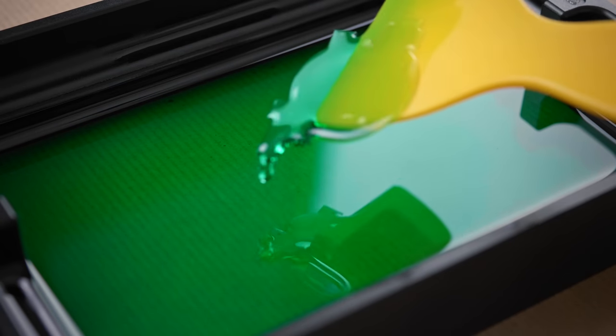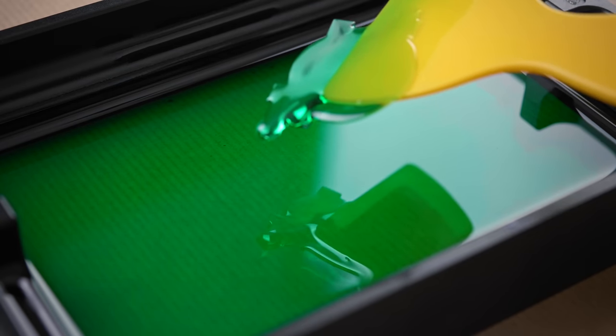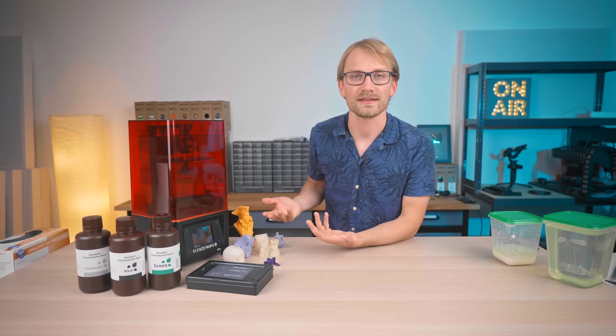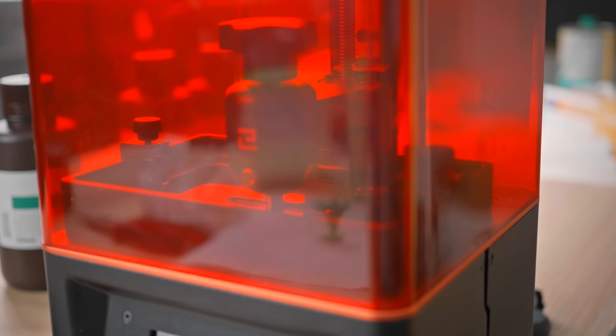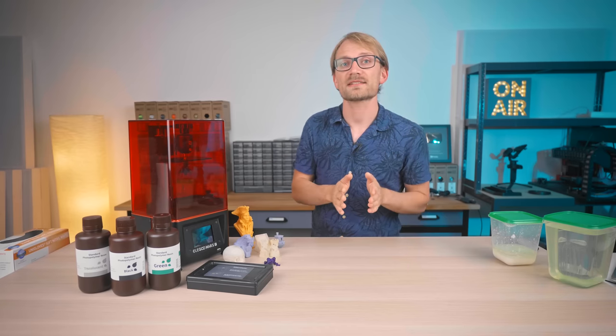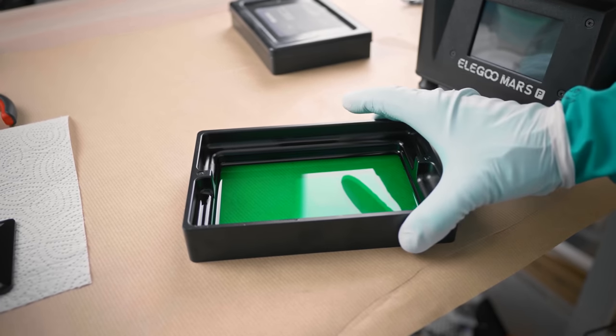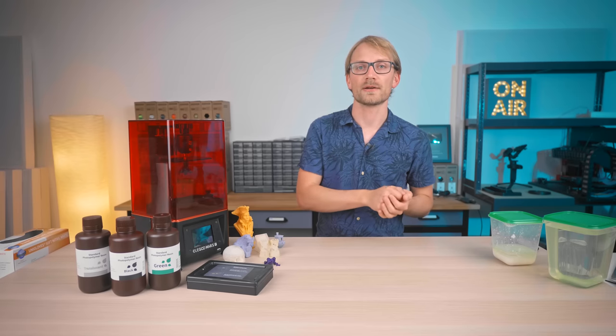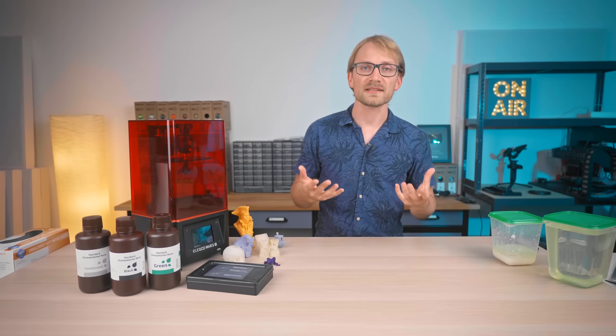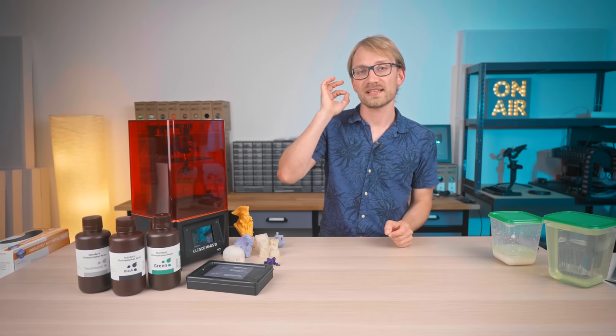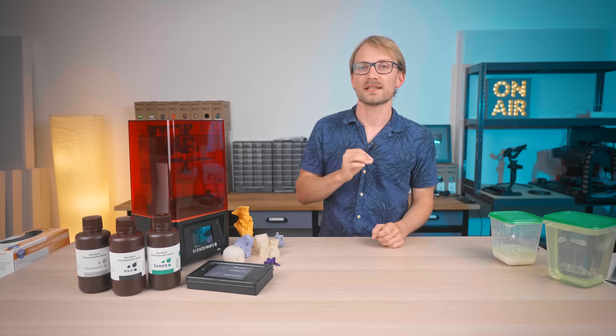So now we have a single cured layer of our part, but really we want something a bit more 3D, right? So in normal use, that first layer is cured with the build platform almost touching the bottom of the vat, so that the resin cures onto the platform and sticks to it. Then, as the build platform moves up, it basically rips the cured resin from the bottom of the vat. That clear plastic, that's a non-stick film that will allow the cured resin to release after each layer. So once that's released, the build platform moves back down, but now leaves just a tiny gap, and that's where the next layer can form.